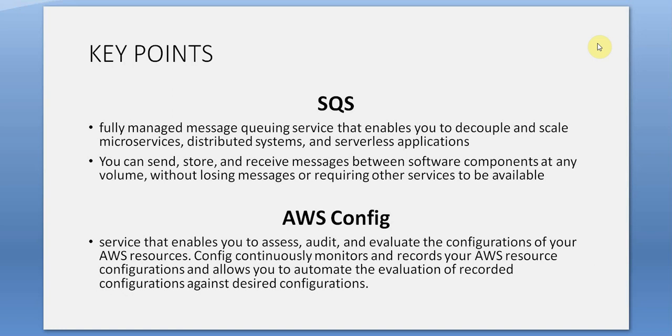AWS Config: a service that enables you to access, audit, and evaluate the configurations of your AWS resources. Config continuously monitors and records your AWS resource configurations, and allows you to automate the evaluation of recorded configurations against desired configurations.